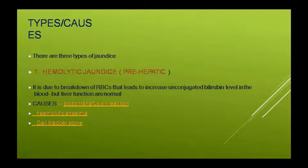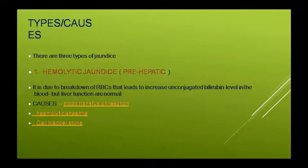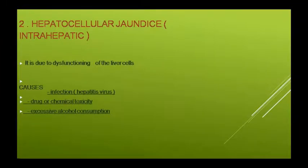Liver से निकलने के बाद bile duct में अगर कोई obstruction है तो unconjugated bilirubin का level blood में बढ़ जाएगा, पर liver का function इसमें normal रहता है। यह blood transfusion reaction की वजह से हो सकता है, hemolytic anemia में हो सकता है, या gallbladder के stone से भी हो सकता है।